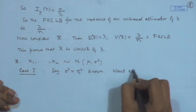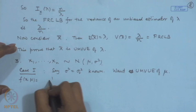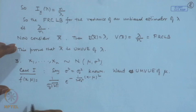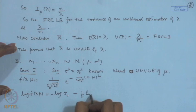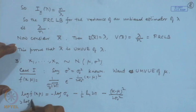If we write down the distribution: 1/(σ₀√(2π)) × e^(−1/(2σ₀²)(x−μ)²). Then log f = −log σ₀ − (1/2)log(2π) − (x−μ)²/(2σ₀²). Taking the derivative with respect to μ, we get (x−μ)/σ₀².